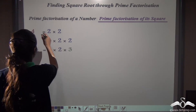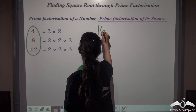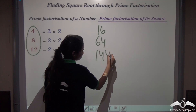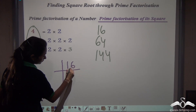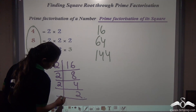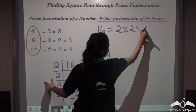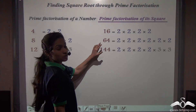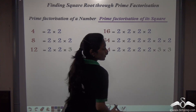Now let's find the prime factorization of the squares of these numbers. 4 squared is 16, 8 squared is 64, and 12 squared is 144. The prime factorization of 16 is 2 into 2 into 2 into 2. For 64, it is 2 multiplied six times. For 144, it is 2 multiplied four times into 3 multiplied two times.